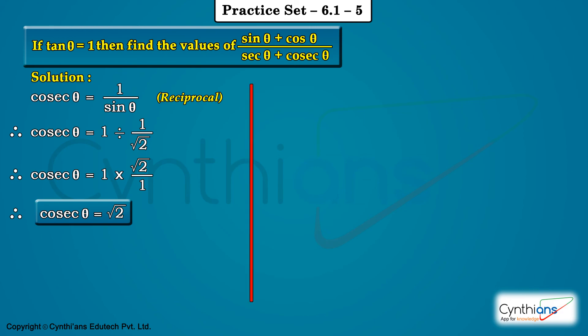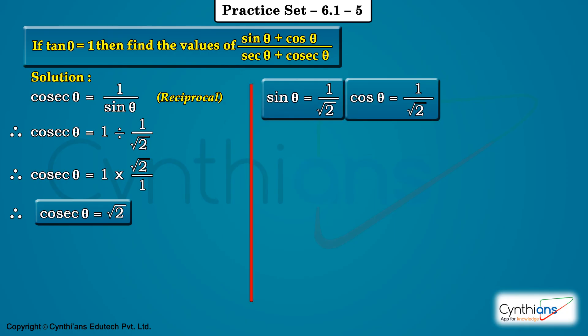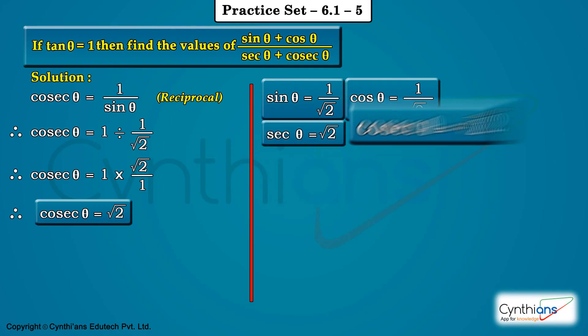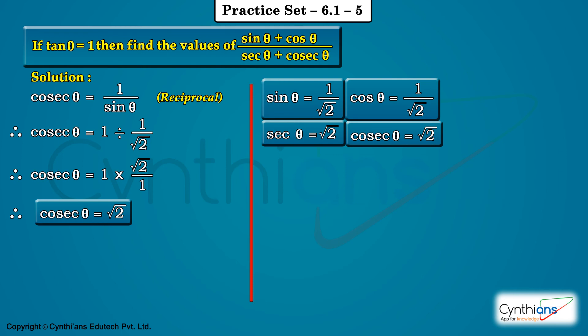We wanted sin theta — we have it as 1 upon root 2. We wanted cos theta — we have it as 1 upon root 2. We wanted sec theta — we have it as root 2. And cosec theta is also root 2. Since we have all the values, let us substitute in the equation and get the final answer.